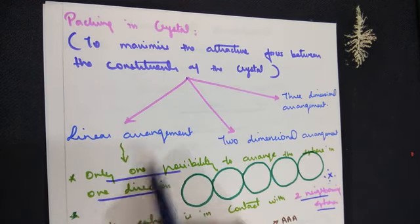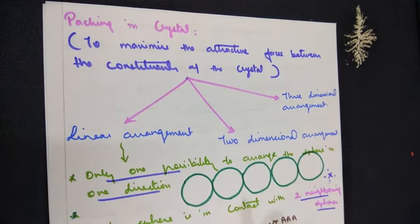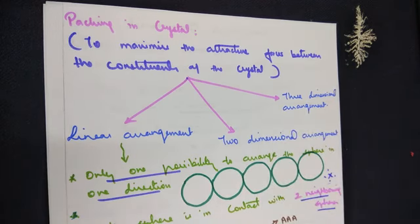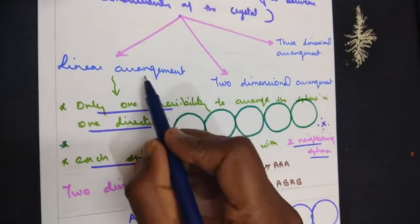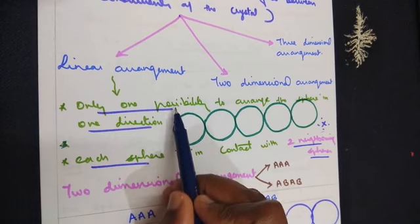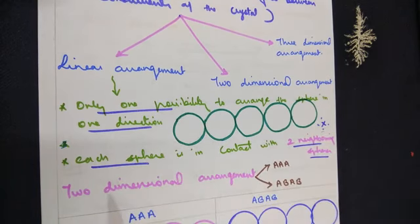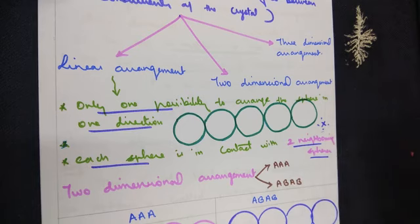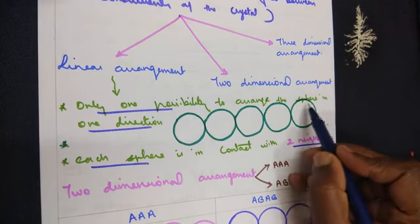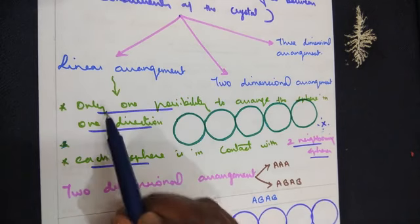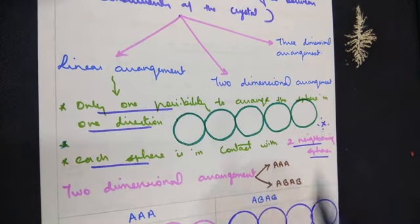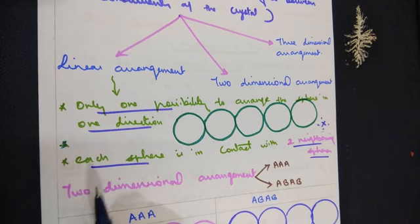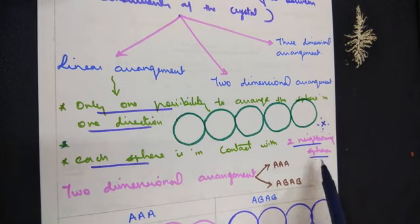One is linear arrangement. The second concept is two-dimensional arrangement, and the third type is three-dimensional arrangement. Let's see each one in detail. In linear arrangement, there is only one possibility to arrange the spheres in one direction. We use the word sphere because atoms, ions, or molecules are found in the form of a sphere. Each sphere is in contact with two neighboring spheres.